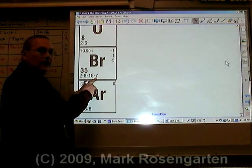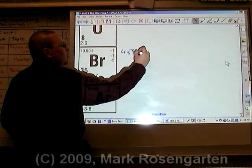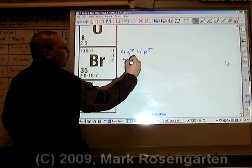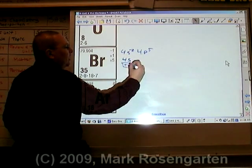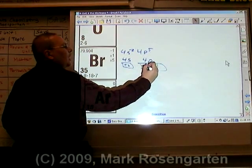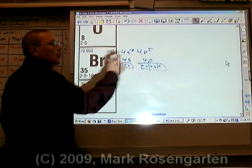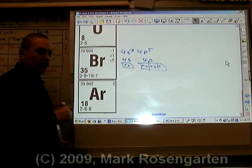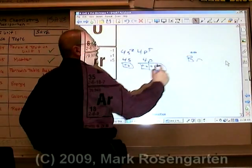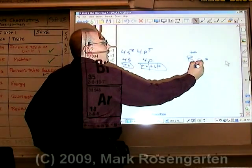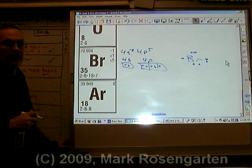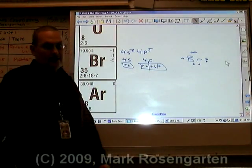Bromine has seven valence electrons: 4s2, 4p5 adds up to the seven. The box diagram is 4s: up, down; 4p has five electrons — up, up, up, then down, down — meaning there's only one unpaired electron. In the dot diagram, the S electrons go together, the P electrons fill in with three pairs and one unpaired. So Bromine can form a single covalent bond.